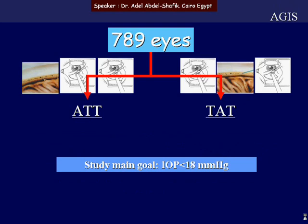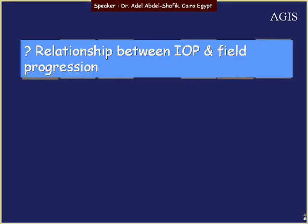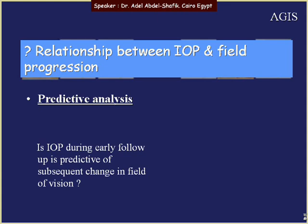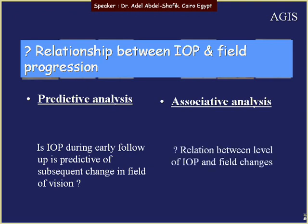The goal was always to keep pressure below 18. To find the relationship between IOP and field progression, two analyses were conducted. The first was a predictive analysis, to determine whether IOP during early follow-up predicts subsequent change in the visual field. The second was an associative analysis, to find any relationship between the level of IOP and visual field changes.